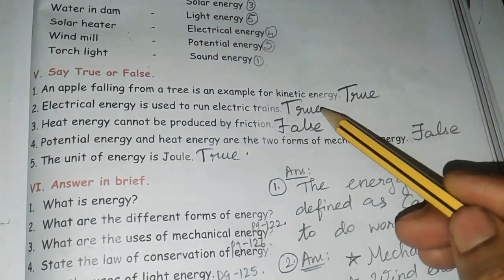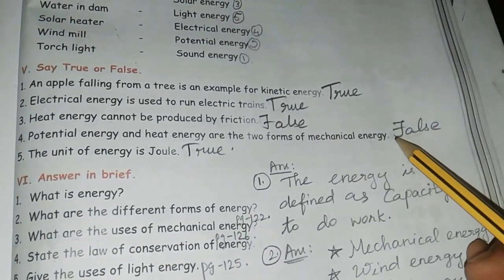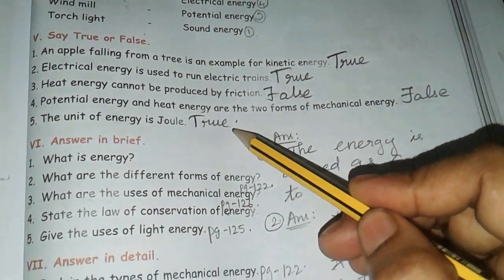True or false: first one true, second one true, third one false, fourth one false, and then fifth one true.